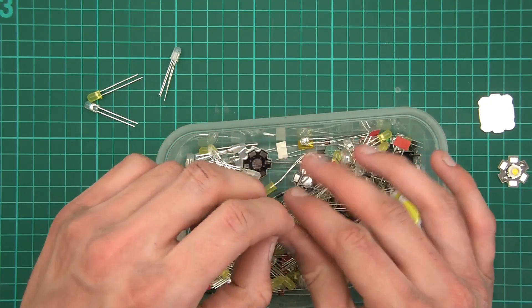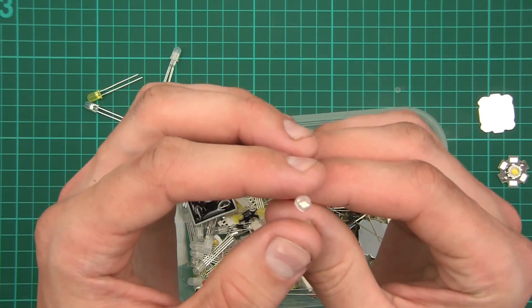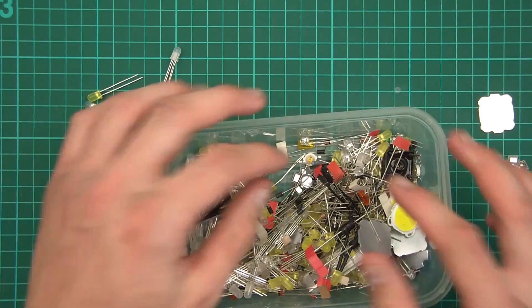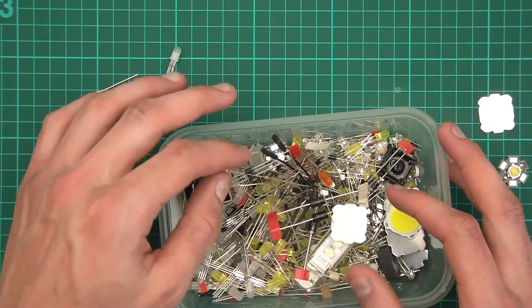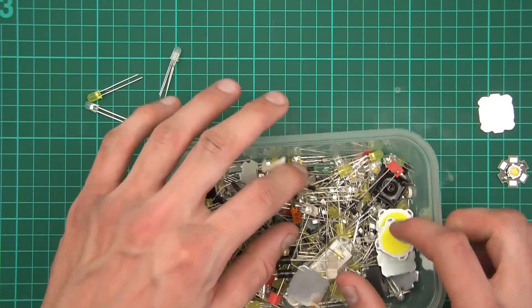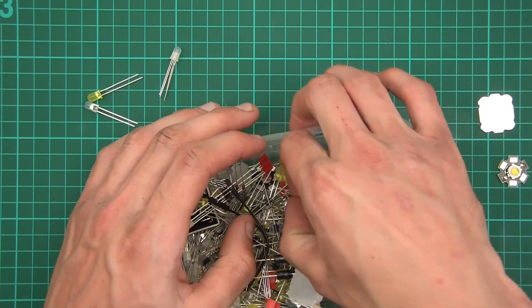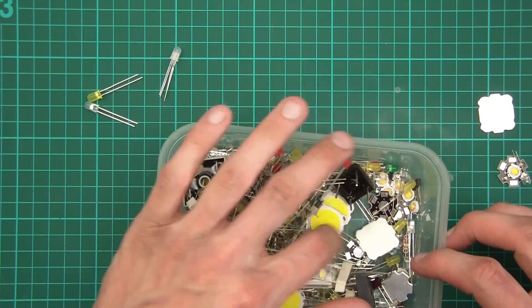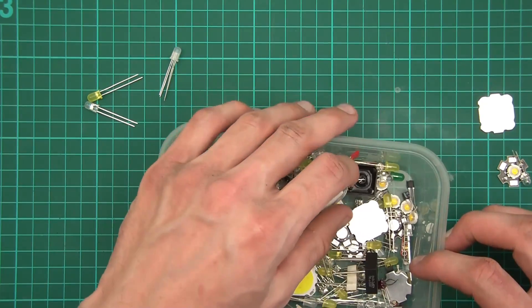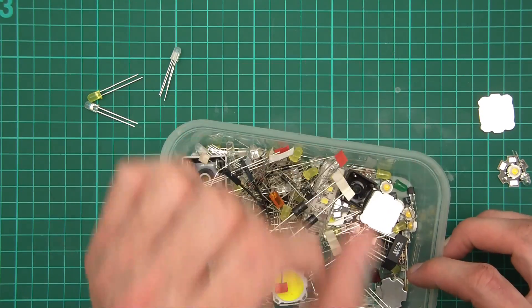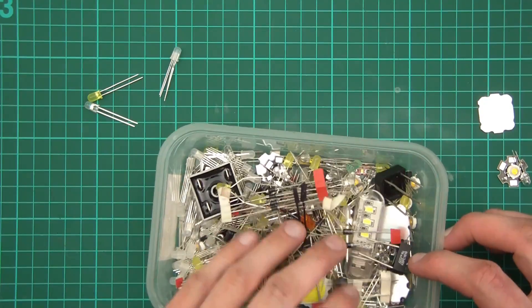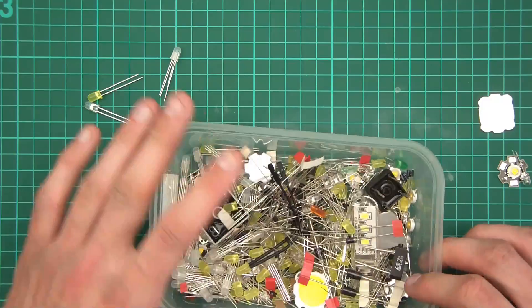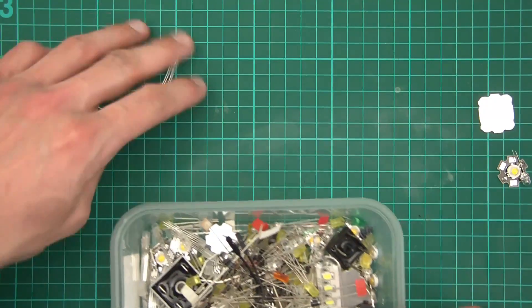These are the straw hat ones or whatever they're called, and that could be good. So I think that's all the different types of LEDs I've got - a couple of green ones and whatever but of course they're not going to be any good. So I think that's about it. Let's test them out and see which ones are most appropriate.